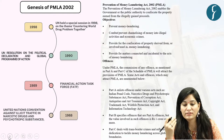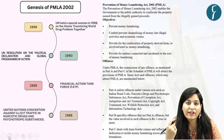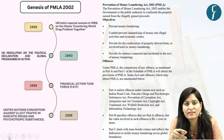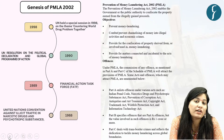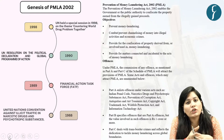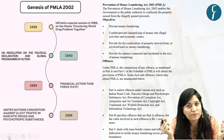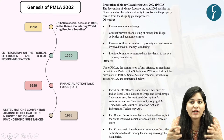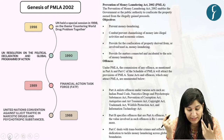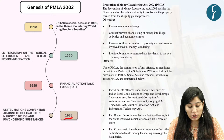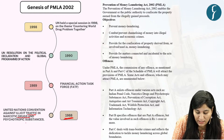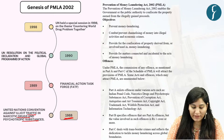Let's start with the genesis of Prevention of Money Laundering Act 2002. In the 1980s, there was a global consensus that there is a need to curb black money coming from the flourishing drug trade, as it could destabilize the world economy and pose a threat to sovereignty and stability of various nations. For that reason, in 1988, the United Nations came with a convention against illicit traffic in narcotic drugs and psychotropic substances.